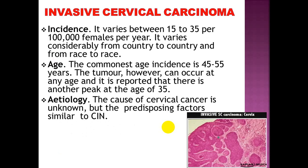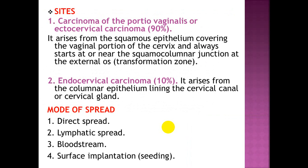Invasive cervical cancer: incidence varies between 15 to 35 per 100,000 females per year and varies considerably from country to country and race to race. The commonest age of incidence is 45 to 55 years, though it can occur at any age with another peak reported at age 35. The cause of cervical cancer is unknown, but the predisposing factors are similar to CIN. Ectocervical carcinoma accounts for 90%, arising from squamous epithelium covering the vaginal portion, always starting at or near the squamocolumnar junction. Endocervical carcinoma accounts for 10%, arising from columnar epithelium lining the cervical canal.